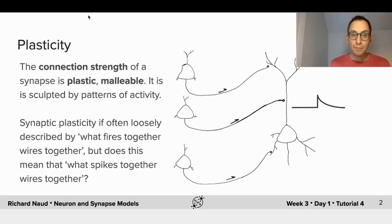Plasticity. When two neurons are connected, the connection strength is plastic, meaning that it is malleable, it can be sculpted, it can be altered.